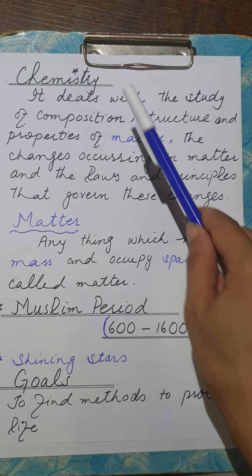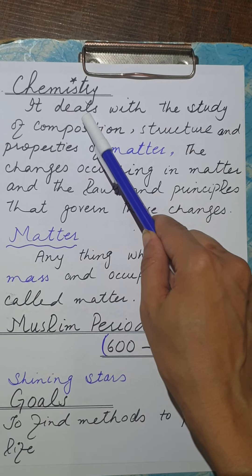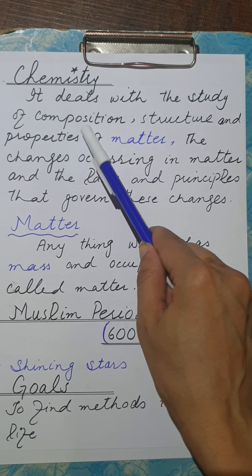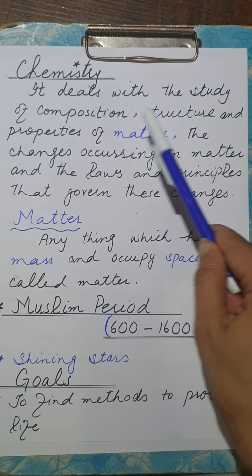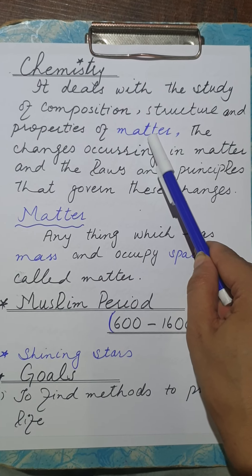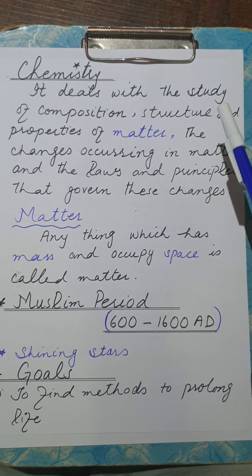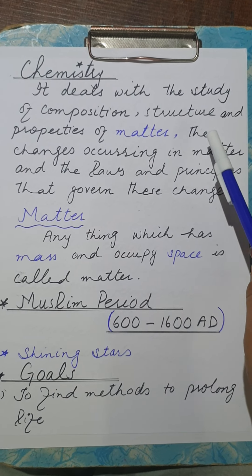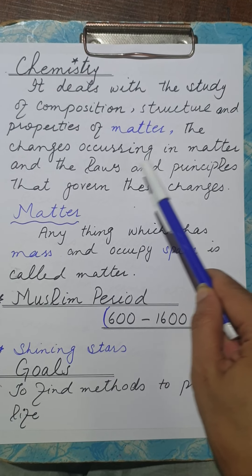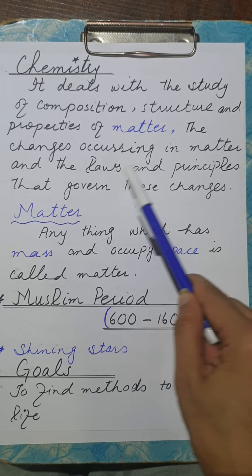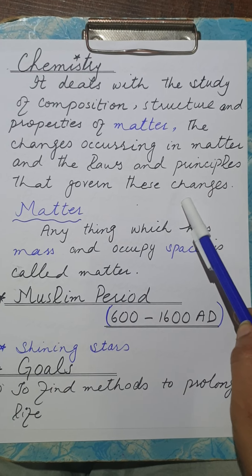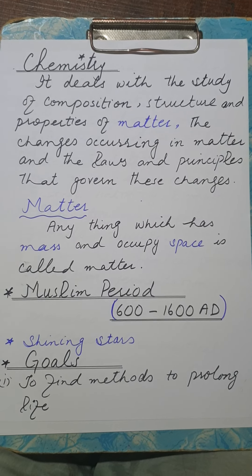So what is chemistry? It is the branch of science which deals with the study of composition, structure, and properties of matter. Besides these, there are chemical changes occurring in matter and the laws and principles which are responsible for these changes are also studied in chemistry.